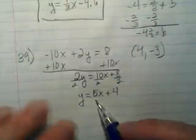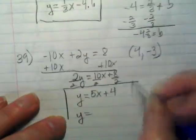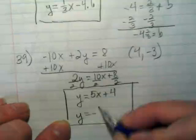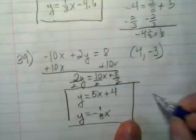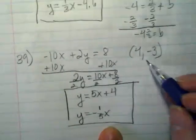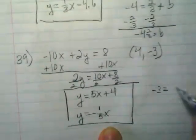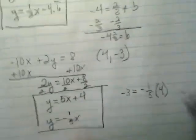We're going to set up the second equation in our answer space with the negative reciprocal of this slope, which would be negative 1 fifth x. And then we're going to go over here and solve this equation with our numbers plugged in. So, negative 3 equals negative 1 fifth times 4 plus b.